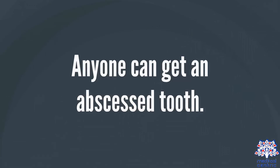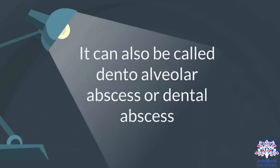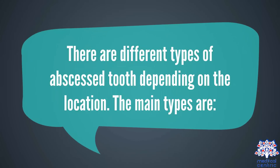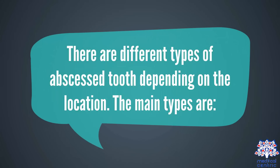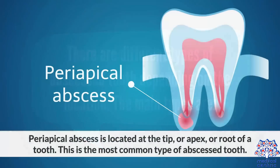Anyone can get an abscessed tooth. It can also be called dental abscess. There are different types of abscessed tooth depending on the location. The main types are periapical abscess, which is located at the tip or apex of the root of a tooth. This is the most common type of abscessed tooth.